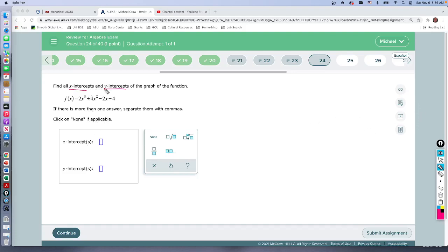Y-intercepts will be the quickest because remember y-intercepts those are all points where x equals zero and y is some value. X-intercepts that's where y equals zero and x is some number.